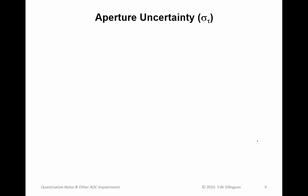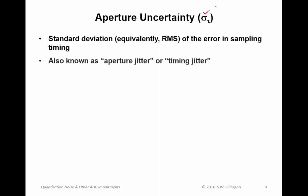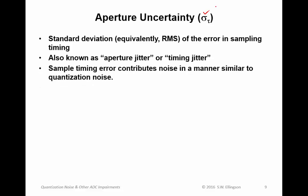Aperture uncertainty, given many different symbols, but a common one is sigma_tau. This is the standard deviation, or equivalently the root mean square, of the error in the sampling timing. It's also known as aperture jitter or timing jitter. Sample timing error contributes noise in a manner similar to quantization noise.